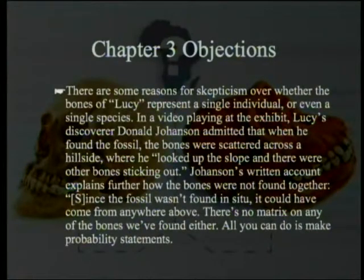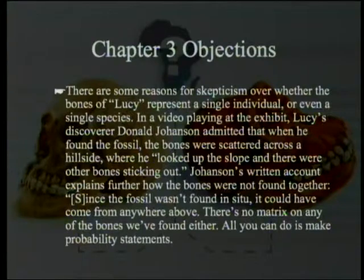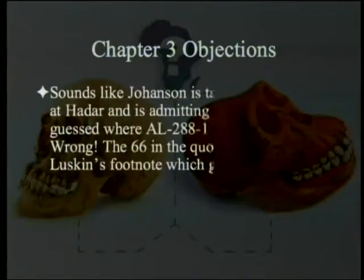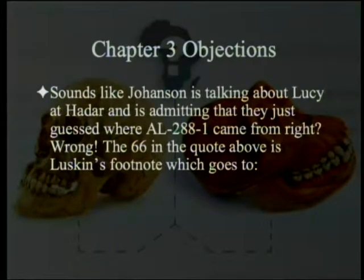From Luskin — and this is of course quoting Luskin — 'there are some reasons for skepticism over whether the bones of Lucy represent a single individual or even a single species. In a video playing at the exhibit, Lucy's discoverer Donald Johansson admitted that when he found the fossil, the bones were scattered across a hillside where he looked up the slope and there were other bones sticking out. Johnson's written account explains further how the bones were not found together. Since the fossil wasn't found in situ, it could have come from anywhere above. There's no matrix on any of the bones we found either. All you can do is make probability statements.' Sounds like Johansson is talking about Lucy and Hadar and is admitting they just guessed where AL-288-1 came from. Wrong.